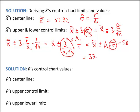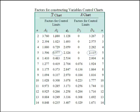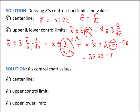So x-bar-bar is 33.32. I put one of these control chart constant tables on the slides — for a subgroup of size 5, A2 is 0.577. Plugging in: 0.577 times 5.8. Doing the addition gives the upper control limit, approximately 36.67. Doing the subtraction gives the lower control limit, approximately 29.97.